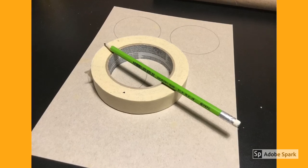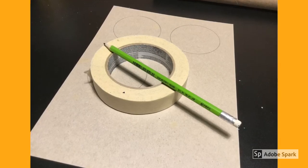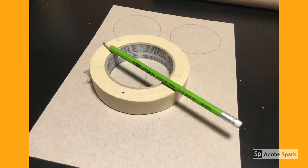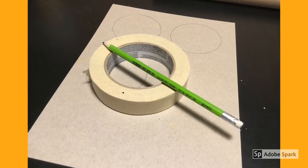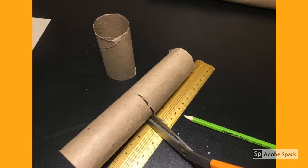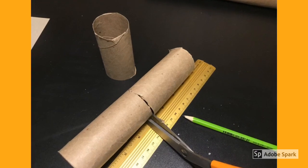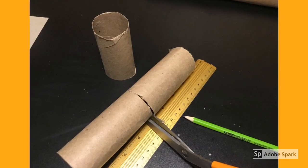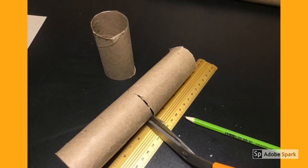First, trace several circles onto your thin cardboard or cardstock. The diameter of the circles should be between 7 to 8 centimeters across. Next, cut your cardboard tube into three sections. Each cylinder should be between 9 to 10 centimeters in height.